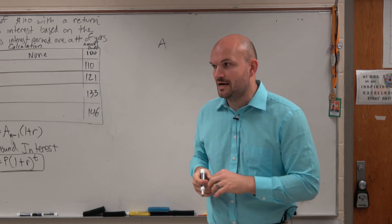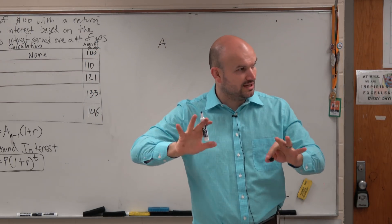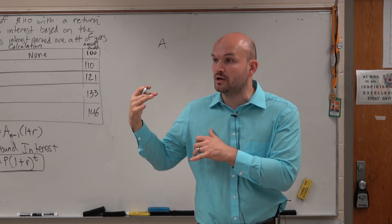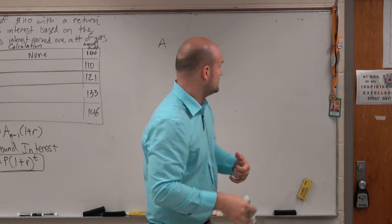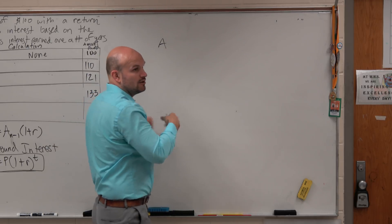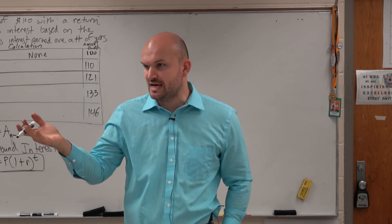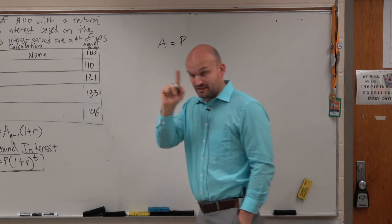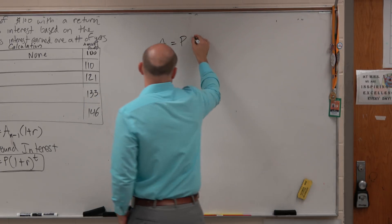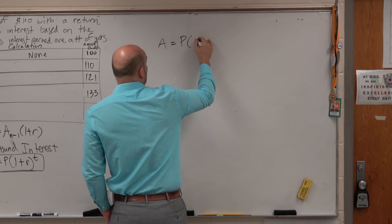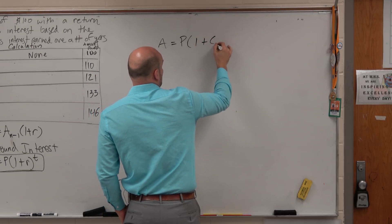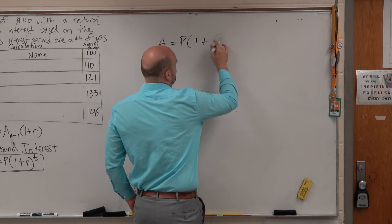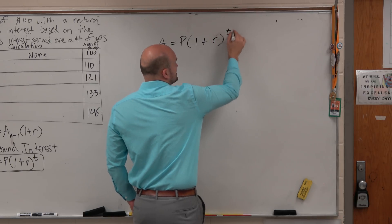Let's go ahead and do the same kind of formula that we use for compound interest, but use that for understanding cells. So A is going to be our final amount, which is really going to be our number of cells, times our initial value — the number of cells we're going to start with — 1 plus our rate of return R, times the number of years t.